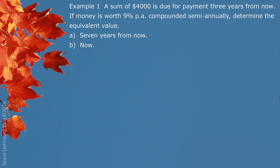We are talking about settling this debt. If we do not pay at 3 years from now and instead pay 7 years from now, how much should it be? That is called equivalent value. In that case, we are going to add 4 years of interest. Since interest is compounded semi-annually, we have present value $4,000, interest rate 9% divided by 2, and the compounding period for 4 years means 8 half-years.